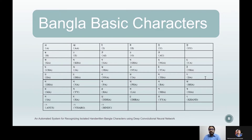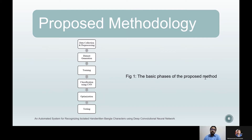The 50 characters are depicted here with symbolic representation denoting the class names of every character. The basic phases of our proposed method for Bangla handwritten character recognition are shown here. The steps are sequentially: data collection and pre-processing, dataset generation, training, classification using CNN, optimization, and testing.